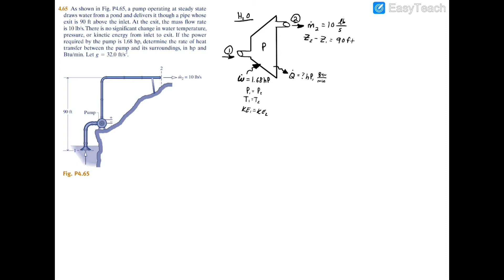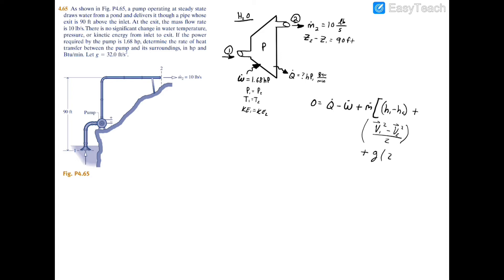The easiest way to find the horsepower for a single inlet, single exit control volume is using the energy balance equation: zero equals the heat transfer minus the power plus the mass flow rate times the change in enthalpy (h1 minus h2), plus the velocity change (V1² minus V2²) divided by two, plus the change in potential energy, which is gravity times (z1 minus z2). It's always inlet minus exit.